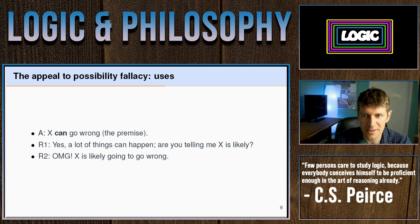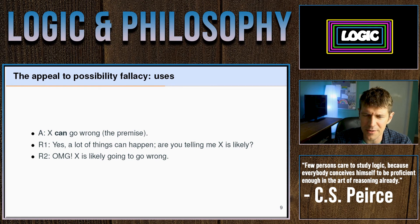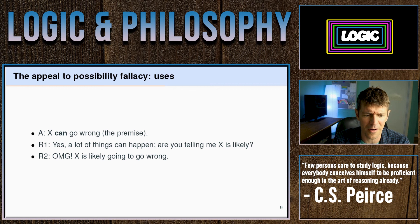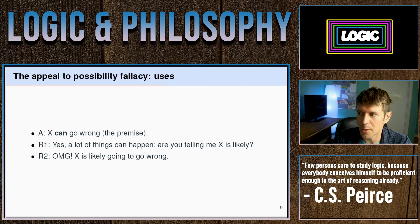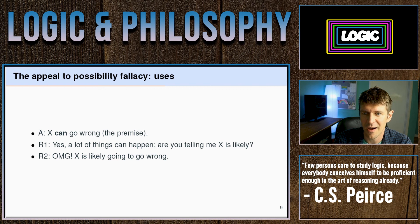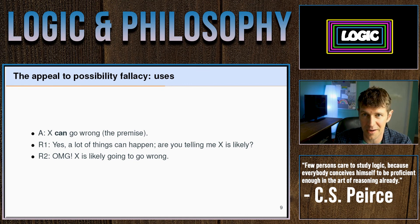Someone might simply assert 'X can go wrong.' You could have two responses: you might say, 'Yeah, lots of things can go wrong — so what? What are you trying to tell me?' But another response is, 'Oh, you're telling me this is actually going to go wrong.' So you're led from someone asserting something could possibly go wrong to the likelihood that it would go wrong. In this way, someone asserting a possibility is encouraging you to commit this fallacy yourself.